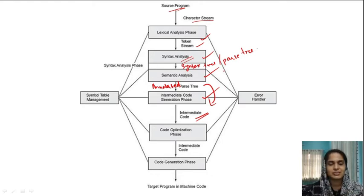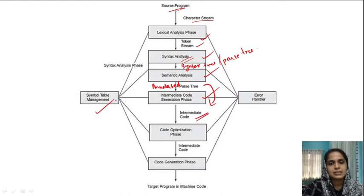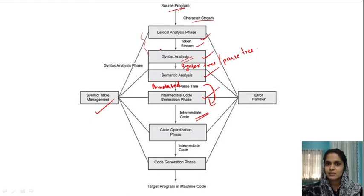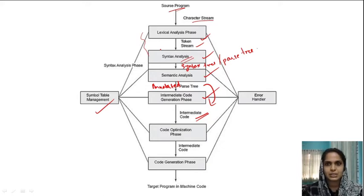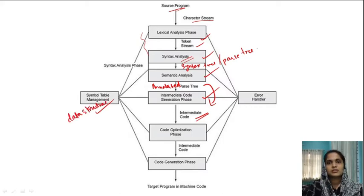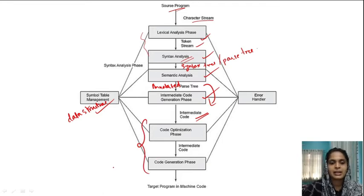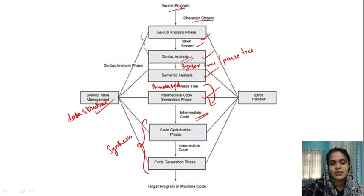We also saw the symbol table: during the above phases, when we discover lexemes we convert them into tokens. Tokens have the format of a token name along with attribute values. These tokens are stored in the symbol table, which is just a data structure to store those token values. In this video we will go through the last two phases of a compiler — the synthesis part, also known as the synthesis phases.